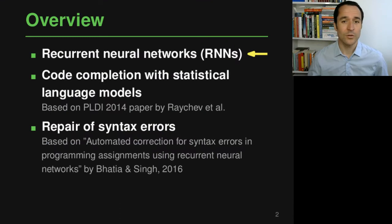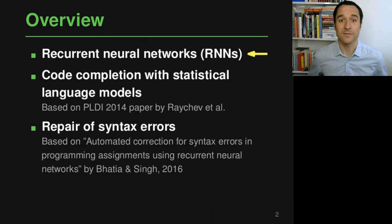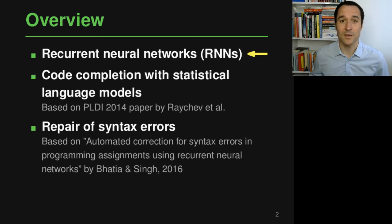This module will have three parts. The first focuses on recurrent neural networks and what they actually are. This first part is not really specific to analyzing software but gives the background on the machine learning side that we need to understand the rest. The second and third parts will show concrete applications: one about code completion, and one about repairing syntax errors using recurrent neural networks.